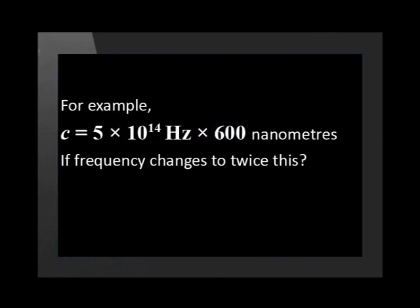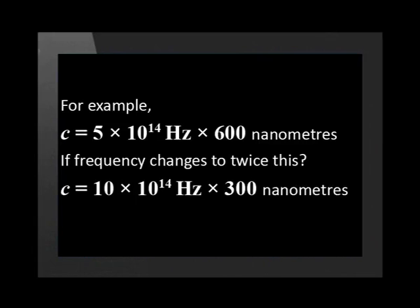How will the wavelength change if the electrons oscillate at twice that frequency? If we double the frequency to 10 times 10 to the power 14 Hz, then we must halve the wavelength to 300 nm so that the speed c remains constant. As the frequency increases, the wavelength becomes shorter. A wave's frequency and its wavelength are tied together by their product c, so we can describe the wave in terms of either frequency or wavelength.